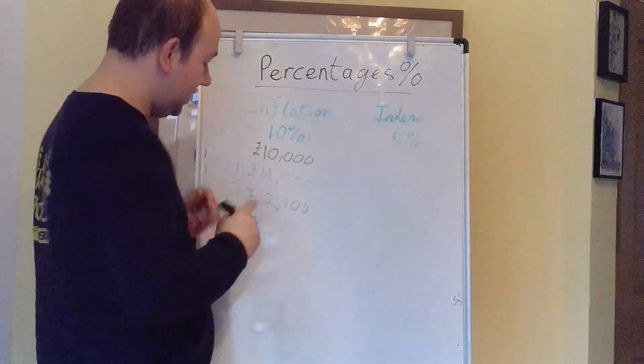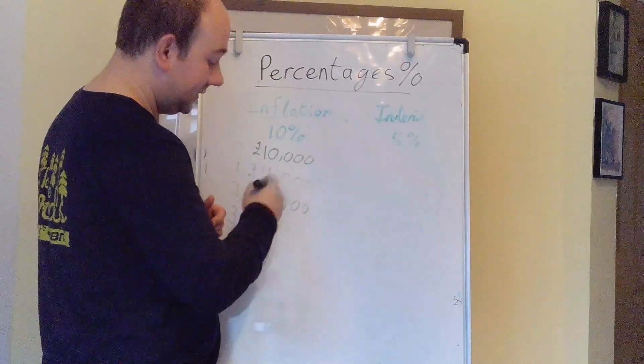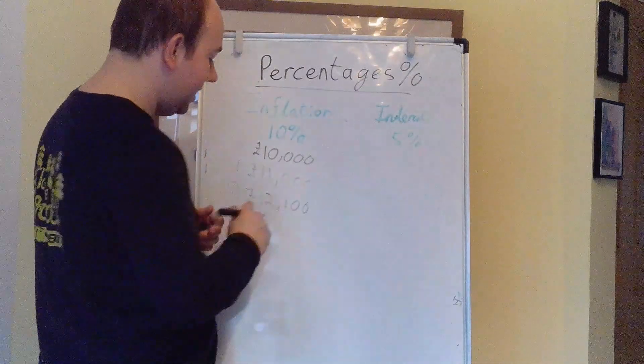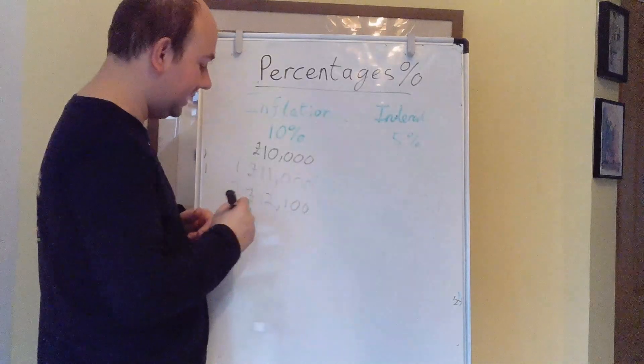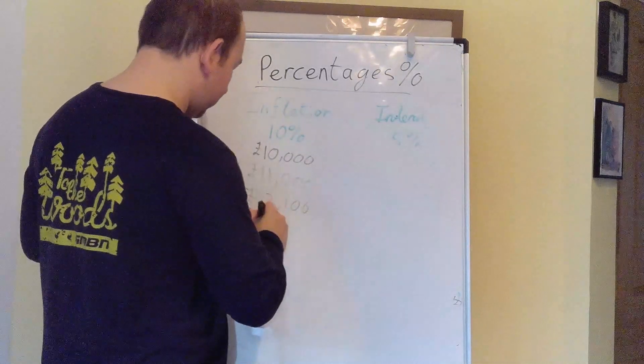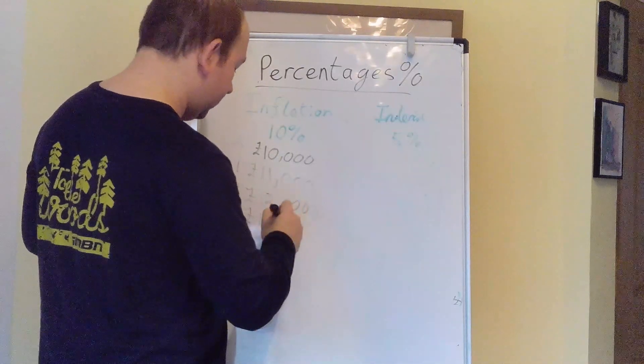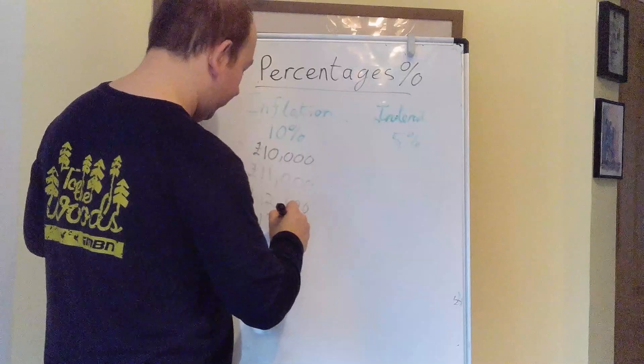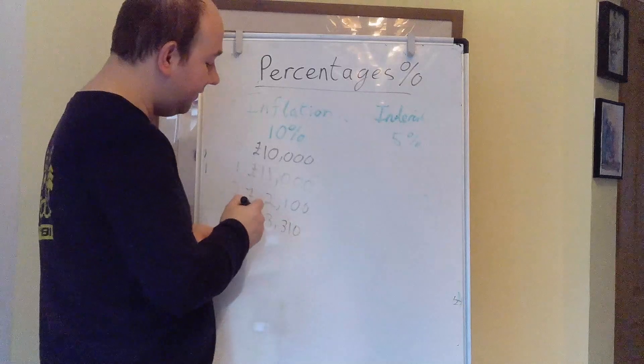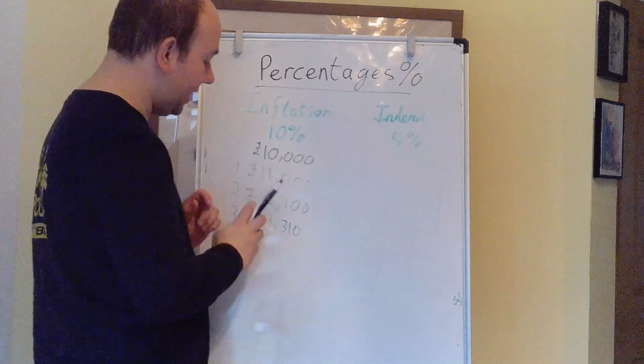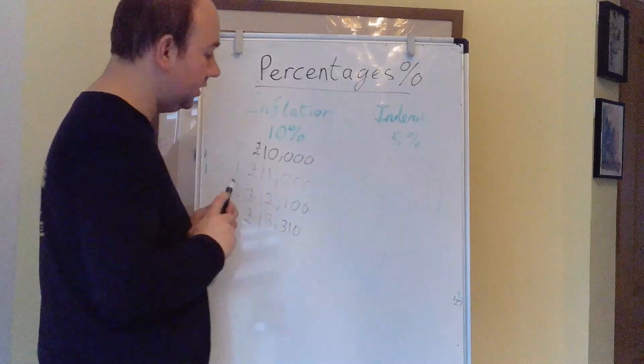After three years, you're going to need another 10% more than this again. So we're going to be adding on to this another £1,210. So after three years, you're going to need £13,310 to purchase your 10,000 Mars bars.